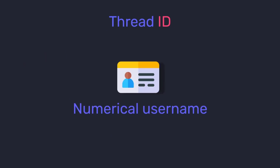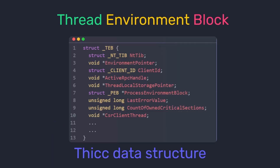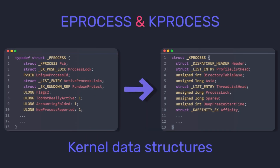Just like processes, threads have their unique identity called a thread ID, used by the operating system to identify them. Next up we have thread affinity, a property that allows us to force Windows to run a thread on a specific CPU only — for example, setting affinity to CPU 3 means the thread will only execute on CPU number three. We also have the Thread Environment Block, or TEB, a user mode data structure that stores a lot of information about the thread — different from the PEB which is for the process. Just like processes, threads also have two kernel mode data structures: ETHREAD, the kernel mode representation of a thread, and KTHREAD.